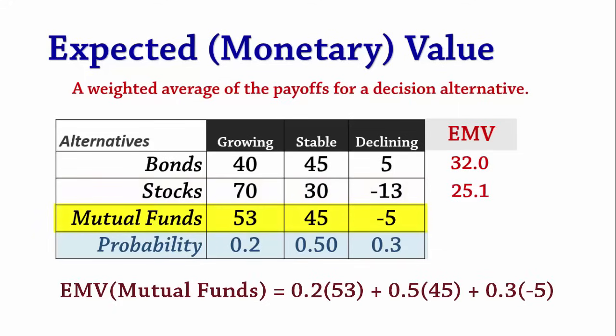For mutual funds, the expected value is 0.2 times 53, plus 0.5 times 45, plus 0.3 times negative 5, which equals 31.6.